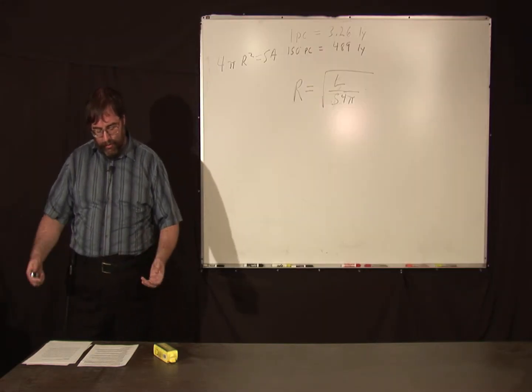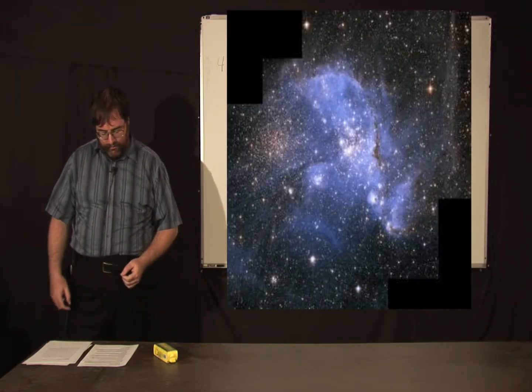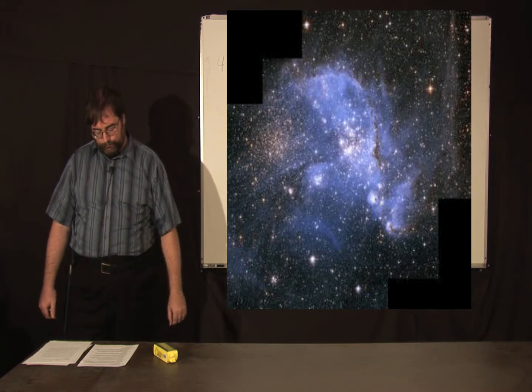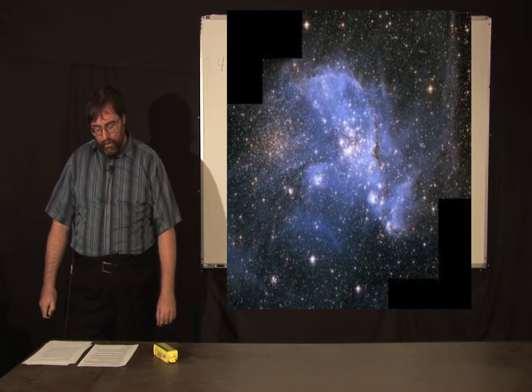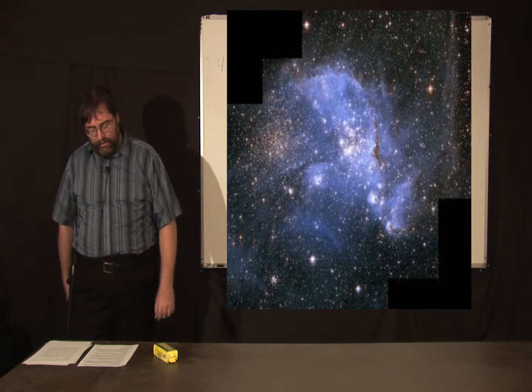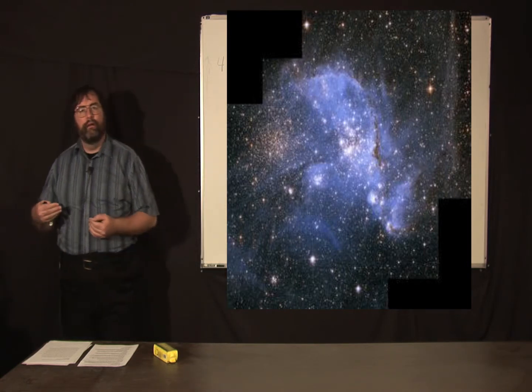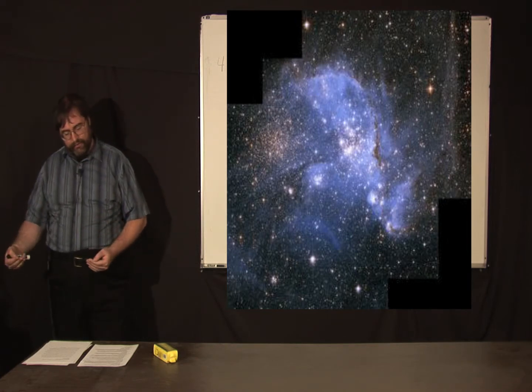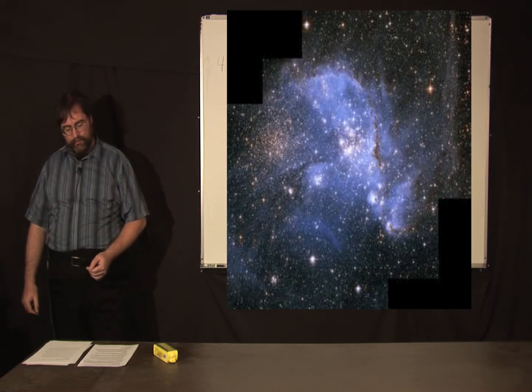Small Magellanic Cloud turns out it's 61,000 parsecs or about 197,000 light years. And again, that shows that the universe is at least 197,000 years old.